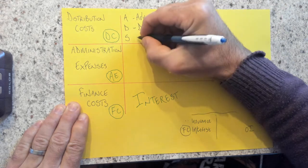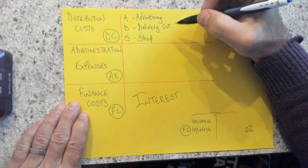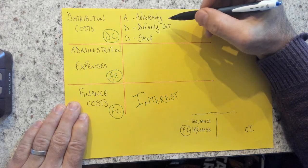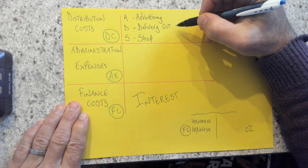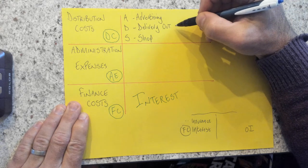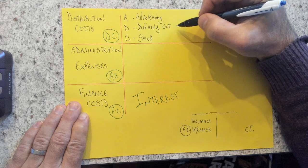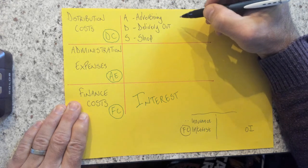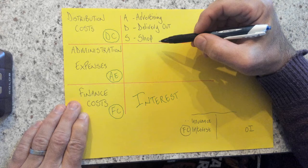Or anything to do with shop. So say for example, I had delivery van driver wages, or I had delivery vehicle petrol, that would be a DC because it comes under delivery, and that's going out to my customer. So if I had shop, if I had shop, anything to do with shop.